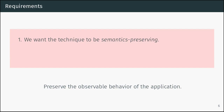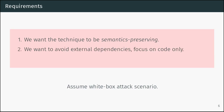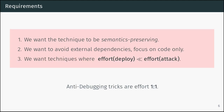Instead, we have certain requirements regarding code obfuscation. First, we want a technique that is semantic preserving — the obfuscated code behaves the same as the unobfuscated code, it just looks more complicated. Second, we assume a white box scenario. That means we don't require hardware dongles; we want to focus on code only and assume the attacker has access to every binary they want to analyze. And finally, we want techniques that are more effort to crack than to deploy.